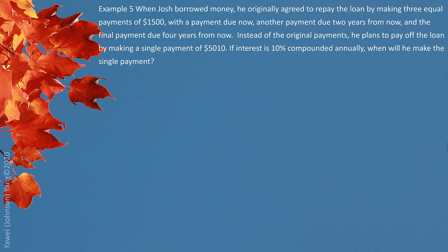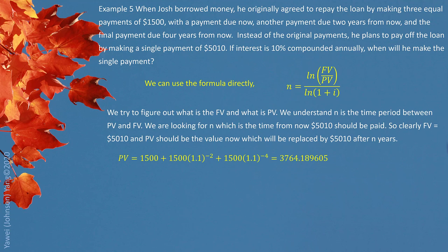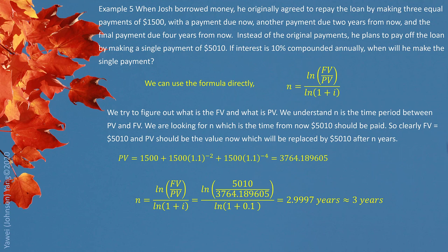Where we can get this present value? The present value we can get from three payments being settled, equal payments. $1,500 now, $1,500 two years later, and $1,500 four years later. We all bring their value to the current now, so their equivalent present value is $3,764.19. And then we put in the formula, and we can get the time period directly, three years.